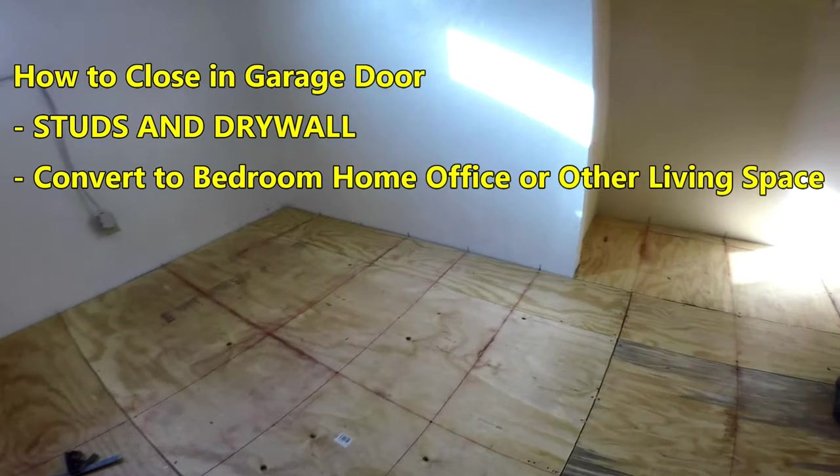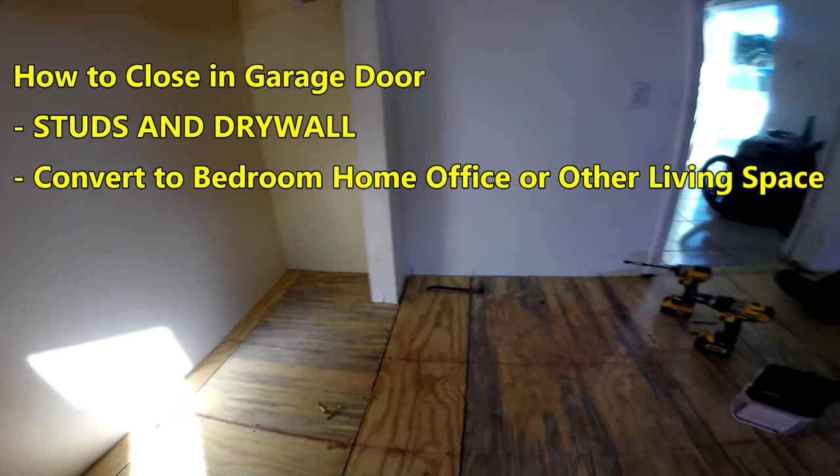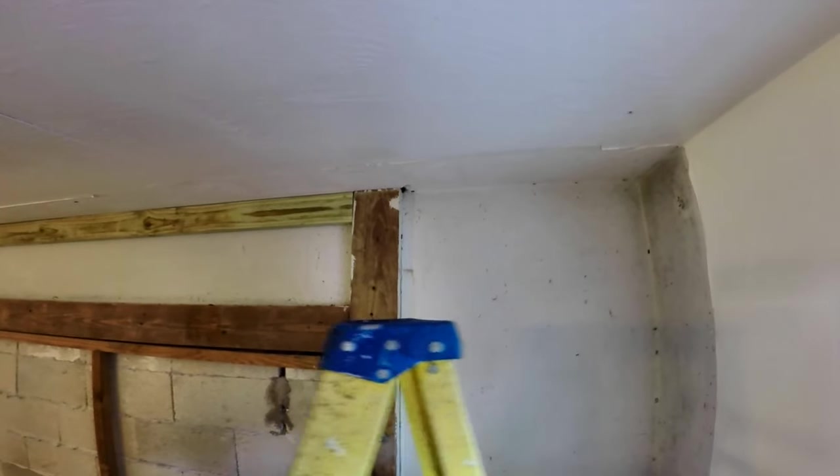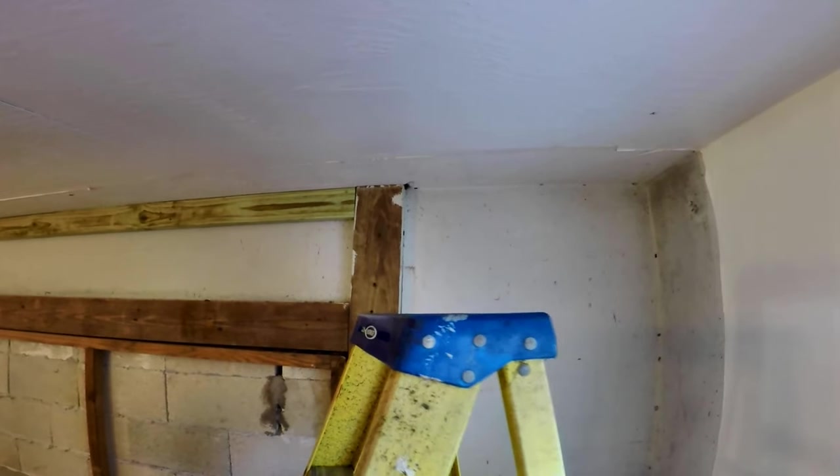We're continuing this garage conversion to a bedroom. We've completed raising the floor to the house level in our previous video. In this video we will cover the wall with studs where the garage door has been blocked on the exterior, and the garage door that was hidden behind the wall has been taken down. The previous owners had built an interior wall with studs and drywall, but it took up about 12 inches in the interior of this room.